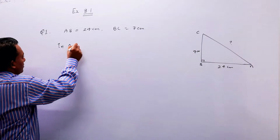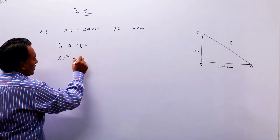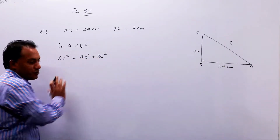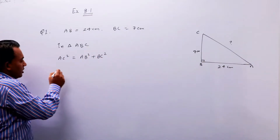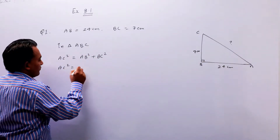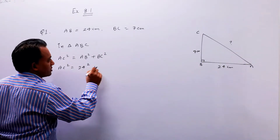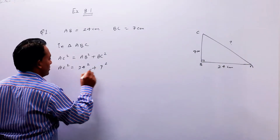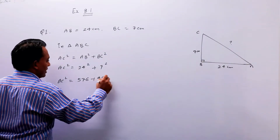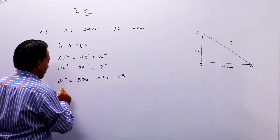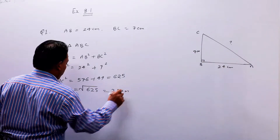तो उसे हम Pythagorean theorem से निकाल लेंगे। In triangle ABC, AC² = AB² + BC²। AC² = 24² + 7² = 576 + 49 = 625। AC मिल जाएगा — 625 का square root लीजिए — 25 cm।